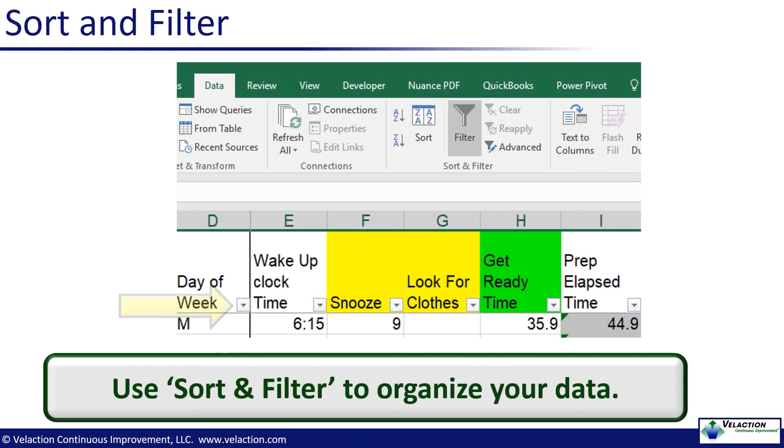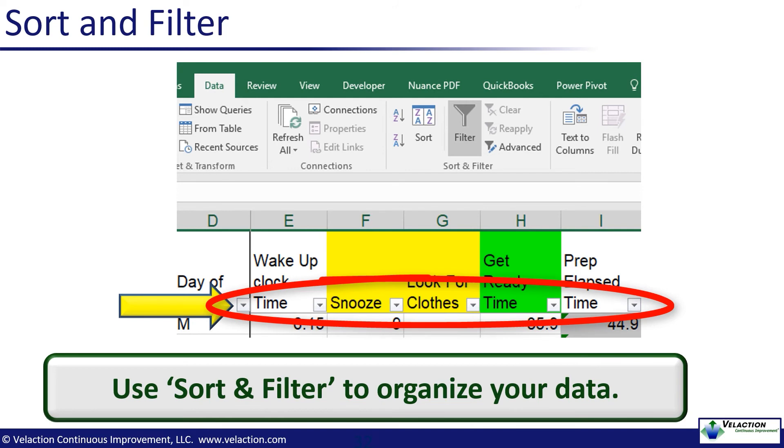Another powerful tool that you will be likely to use is the sort and filter function. This tool actually goes hand in hand with segmentation. Under the data tab, there is a filter button. Highlight the data that you want to be able to sift through and click this option. You'll see the down arrow buttons show up on your header row. Click these little arrow buttons and you can sort the data in ascending or descending order or by category if you have an unordered data set. You can also filter out specific data.